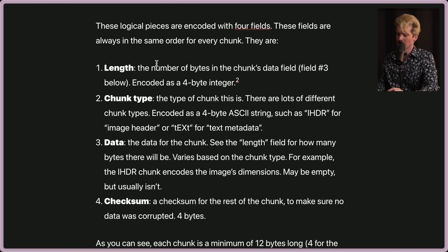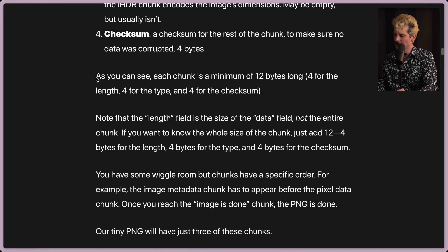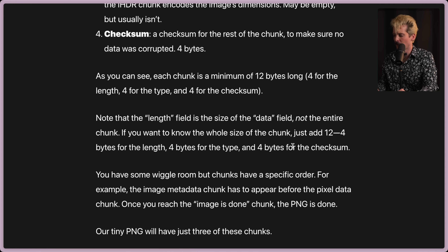The four fields are: length, which is the number of bytes in the chunk's data field; the chunk type, which is the type of chunk you're currently reading; the data, which is the actual content; and a checksum to make sure the data wasn't corrupted — this is only four bytes long. Each chunk is a minimum of 12 bytes: four for the length, four for the type, and four for the checksum. Note that the length field is the size of the data field, not the entire chunk. If you want to know the whole size of the chunk, just add 12.